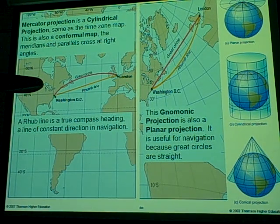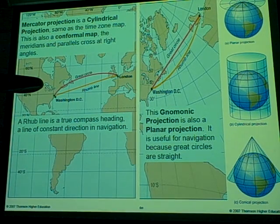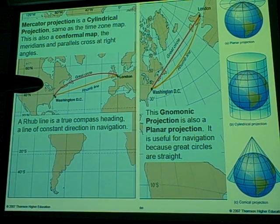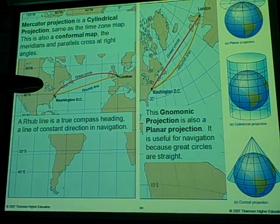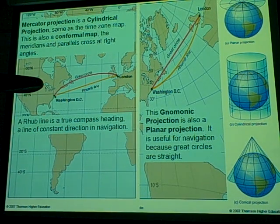There are all kinds of different projections that maps use. If you look at examples where a globe has maps wrapped around it in different ways, picture a globe with a light bulb inside — the shadow of the continents and oceans cast on pieces of paper folded around it in different ways shows how those projections work. You can never have a perfect projection because you can't show a true spheroid like the Earth on a flat piece of paper without some inconsistencies and imperfections.